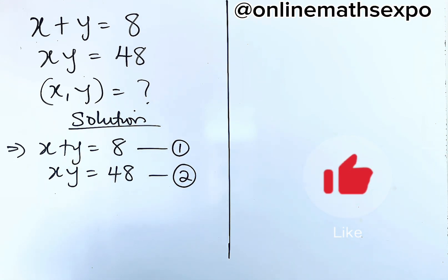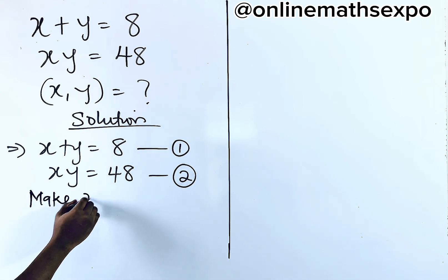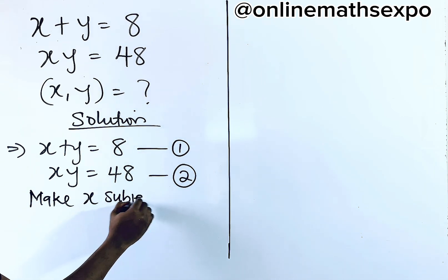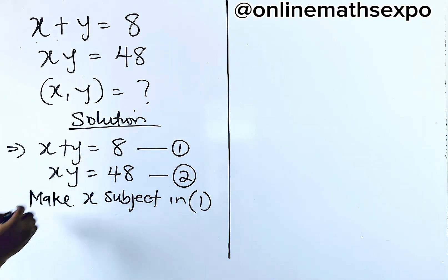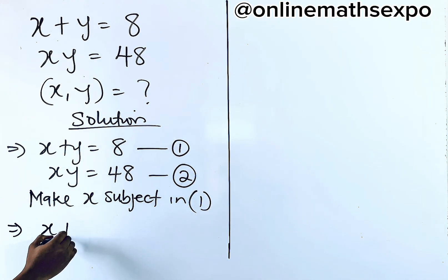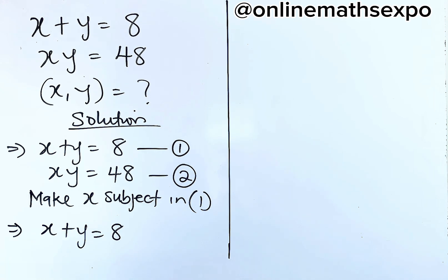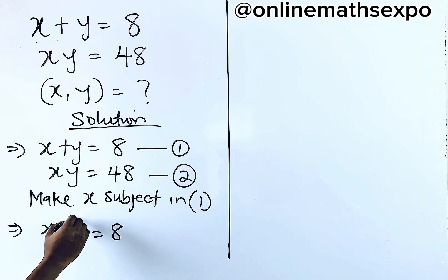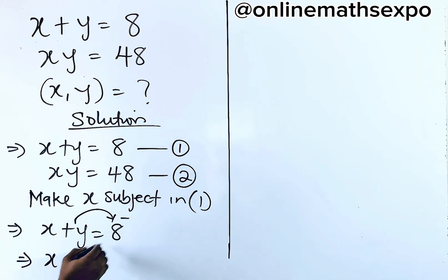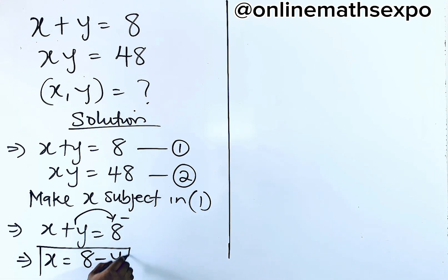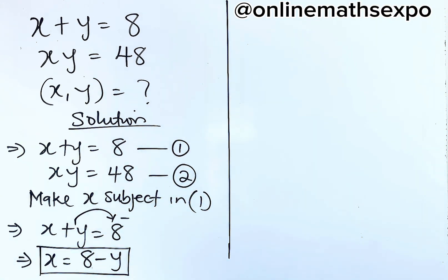You can also do it vice versa, but let's go with equation 1. So we make X the subject in equation 1. We have X plus Y is equal to 8. To make X the subject means to remove this plus Y, and to remove it you need to subtract. So in that case, we have X is going to be 8 minus Y. So we're going to use this value of X and put it in equation 2 to help us get the value of Y.